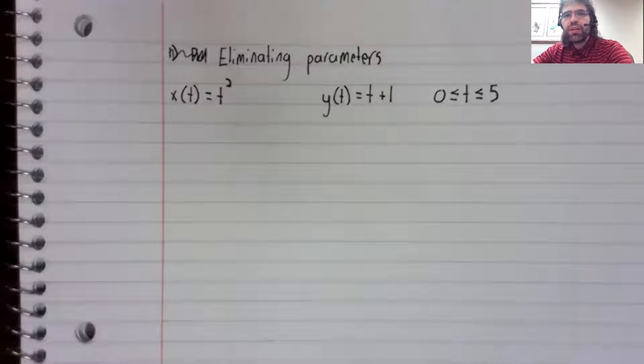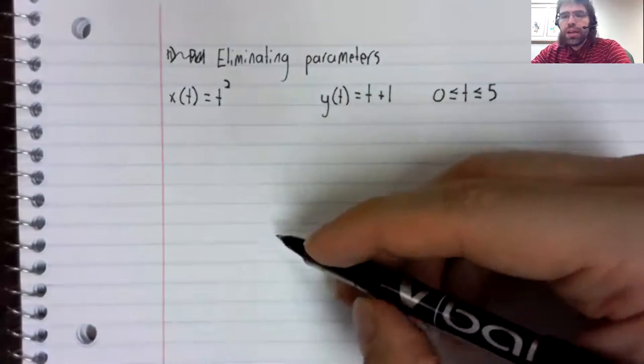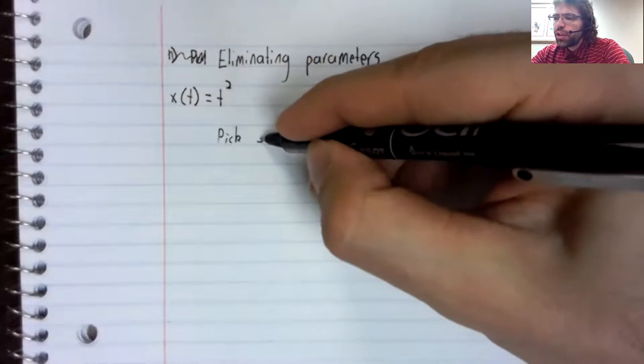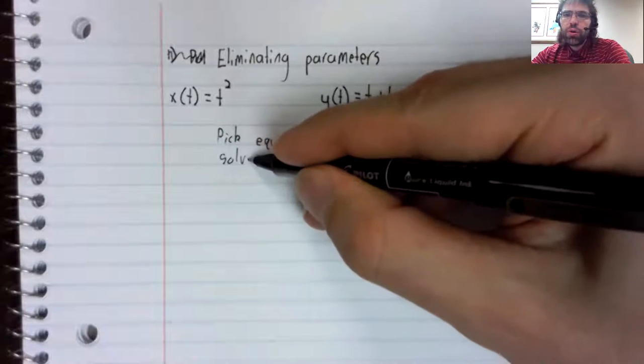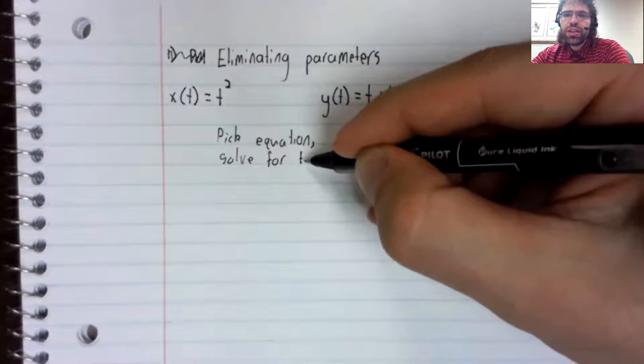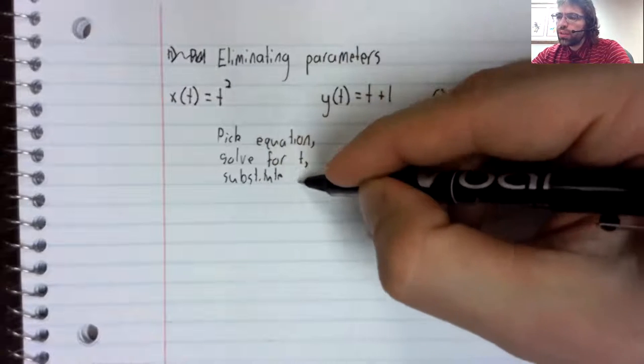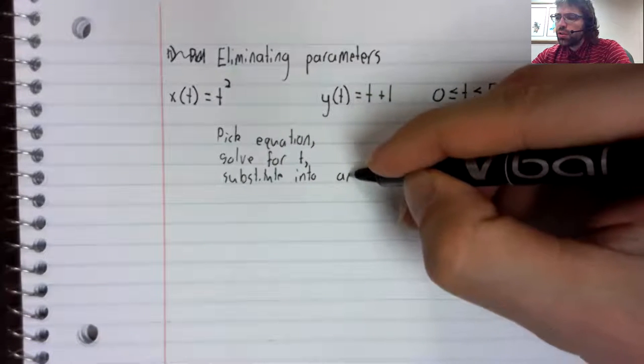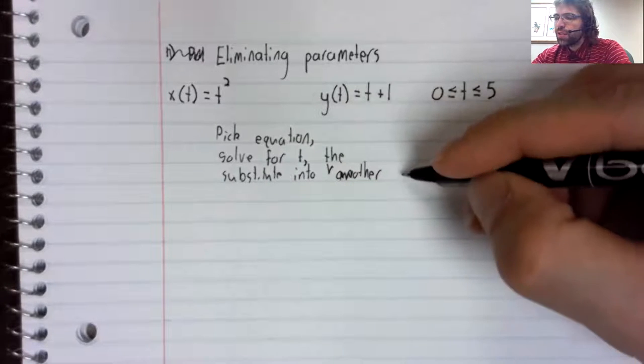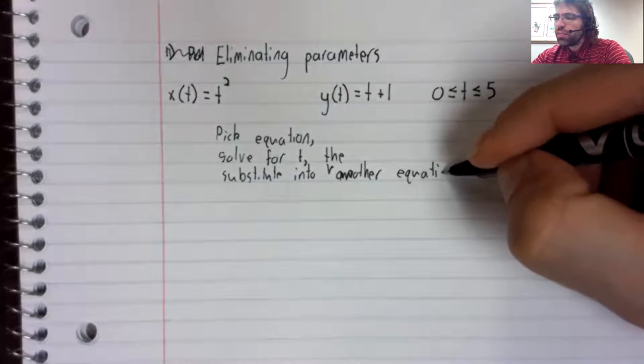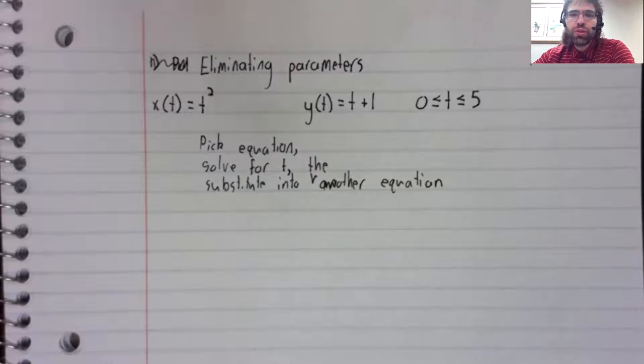We'll introduce this method via example. You have two equations and you pick an equation. You solve for T, and then you substitute it into the other equation. At least that's the general idea. There can sometimes be wrinkles to this.